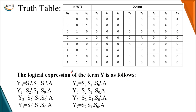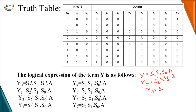The truth table of the 1-to-8 demultiplexer and its output expressions: Y0 = S2_bar · S1_bar · S0_bar · A. Y1 is obtained when S2, S1, S0 are 0,0,1. Y2 is obtained when S2, S1, S0 are 0,1,0 — so Y2 = S2_bar · S1 · S0_bar · A. Y3 is obtained when the selection inputs are 0,1,1 — so the single input is transferred to Y3.